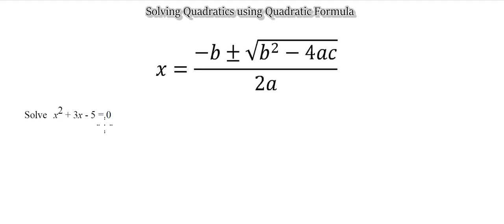So the normal factorization method will be, we will first find out what my a value is. So a equals to 1, we know that. B equals to 3. My c equals to minus 5.